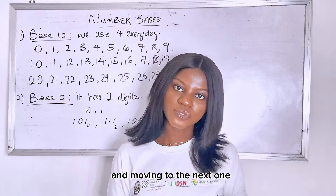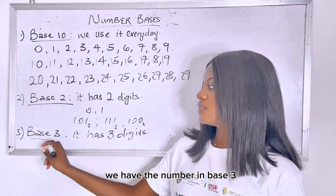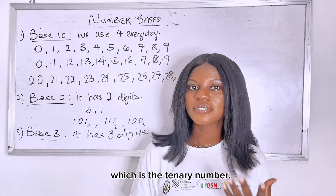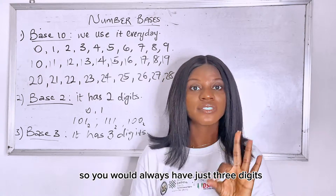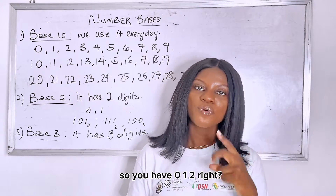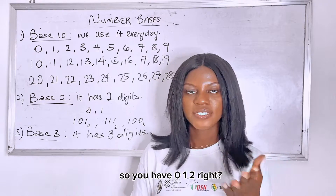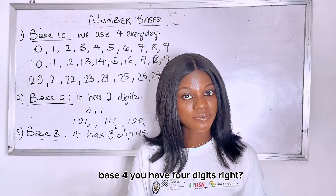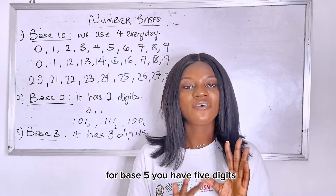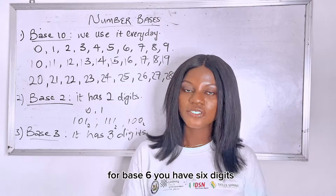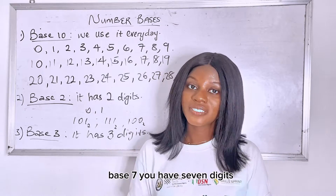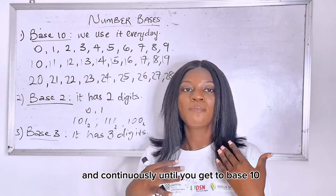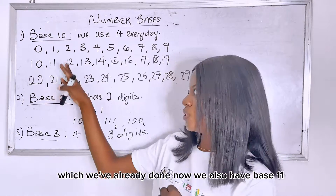Now moving to the next one, we have the number in base 3, which is the ternary number. For ternary numbers you always have just 3 digits: 0, 1, 2. For base 4, you have 4 digits. For base 5, you have 5 digits. For base 6, you have 6 digits, and continuously until you get to base 10, which we've already done.